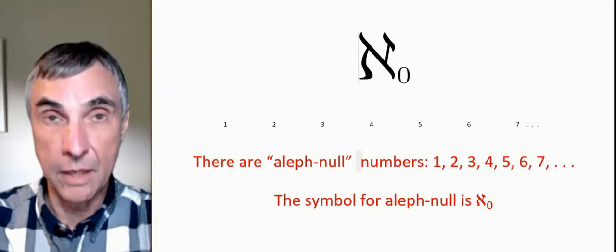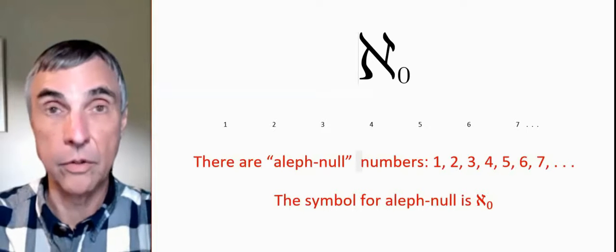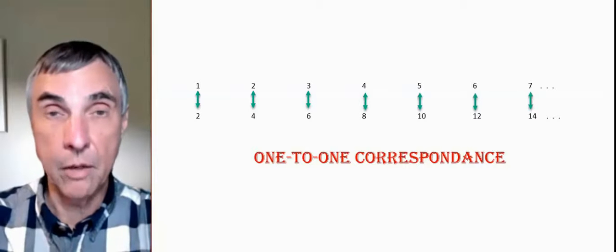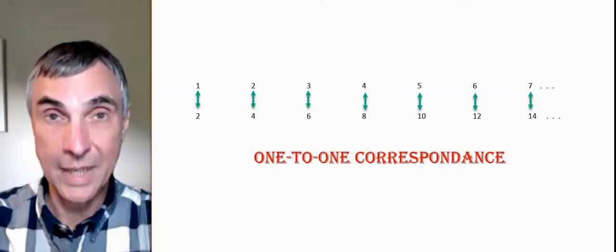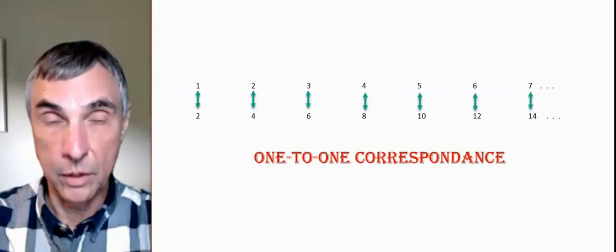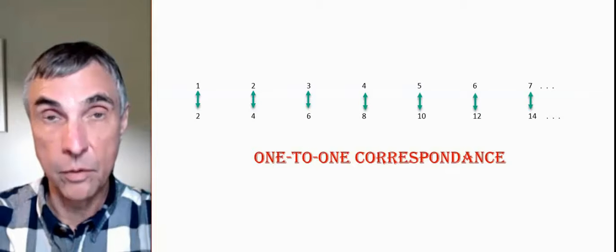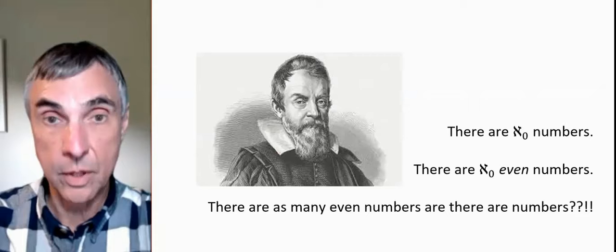Now, how many even numbers do we have? You might say aleph null over 2, divided by 2. Well, we can pair off the numbers and the even numbers. 1 goes with 2, 2 goes with 4, 3 goes with 6, 4 goes with 8, and we never run out. We have a one-to-one correspondence, which would say there's as many even numbers as there are numbers.